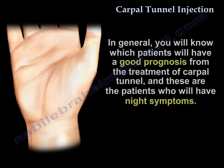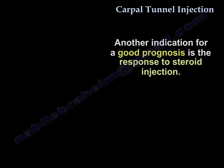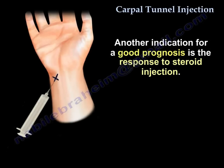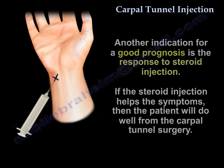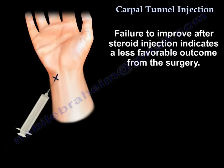In general, you will know which patient will have a good prognosis from the treatment of carpal tunnel — these are the patients that will have night symptoms. Another indication for good prognosis is the response to steroid injection. If the steroid injection helps the symptoms, then that patient will do well from the surgery of carpal tunnel. Failure to improve after a steroid injection indicates a less favorable outcome from the surgery.